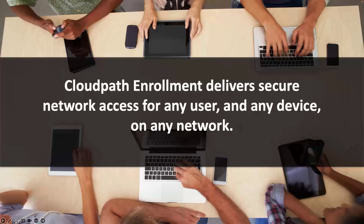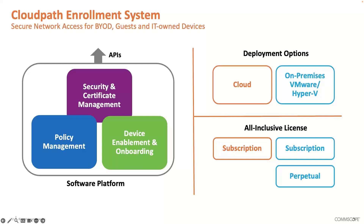CloudPath does have third-party support for other wireless vendors. We'd prefer you put in a Ruckus network, and there are a couple of things we do that are unique for Ruckus wireless. But this will work across any vendor's equipment if you need to solve that onboarding problem. It comes in two flavors: a cloud service that we manage, or you can put it on-premises as a virtual machine run locally or hosted in your own public cloud like AWS or Azure. These days most people prefer the cloud-hosted model.